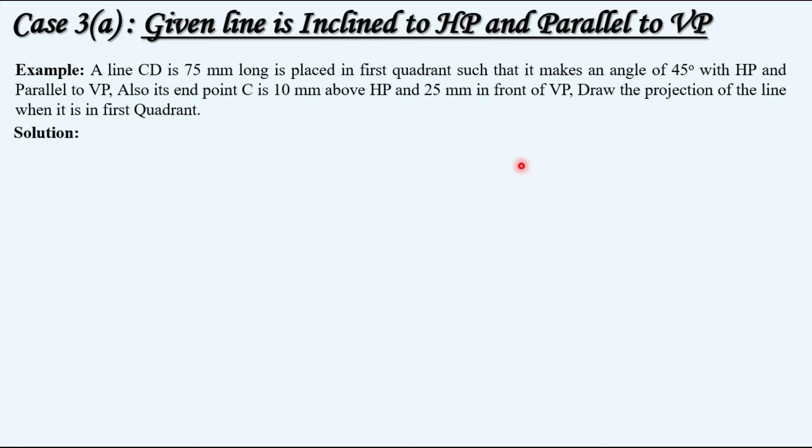A question is given here: A line CD is 75 mm long, placed in first quadrant such that it makes an angle of 45 degrees with HP and parallel to VP. Also, its endpoint C is 10 mm above HP and 25 mm in front of VP. Draw the projections of the line when it is in first quadrant.